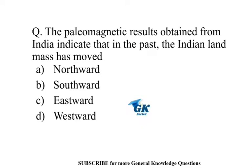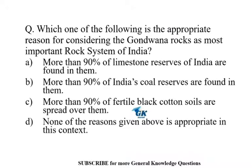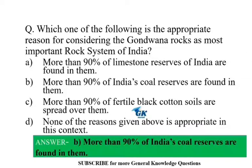The paleomagnetic results obtained from India indicate that in the past the Indian landmass has moved northward. Which one of the following is the appropriate reason for considering the Gondwana rocks as the most important rock system of India? More than 90% of India's coal reserves are found in them.